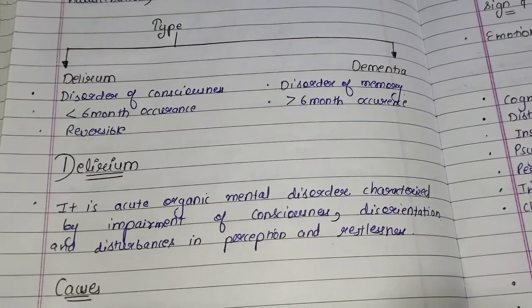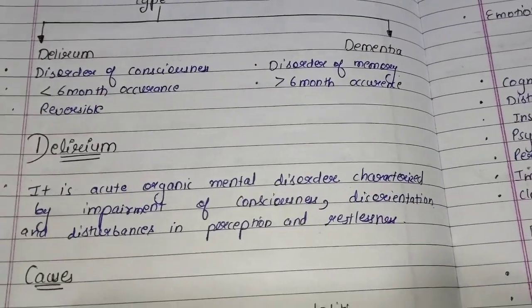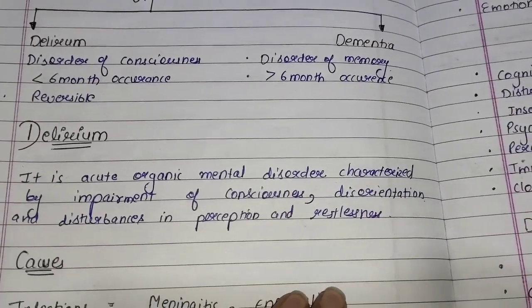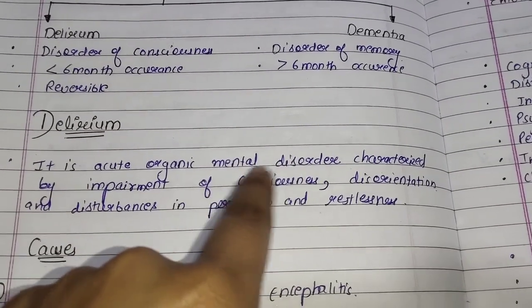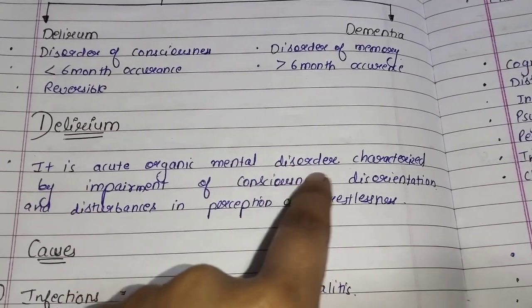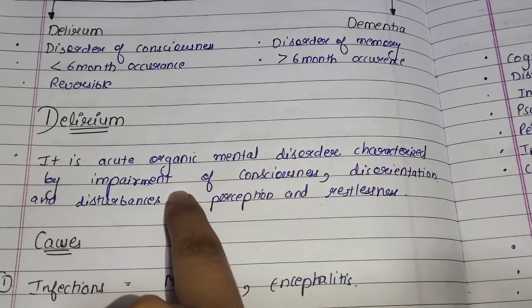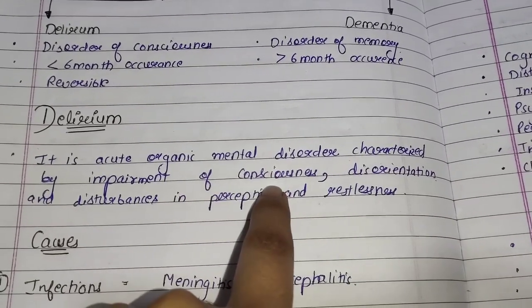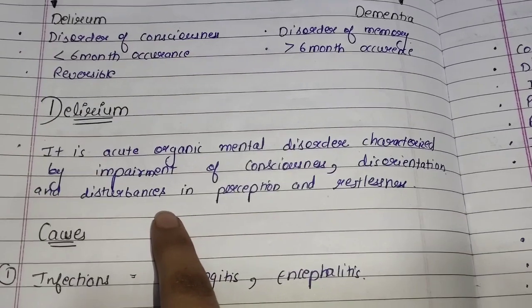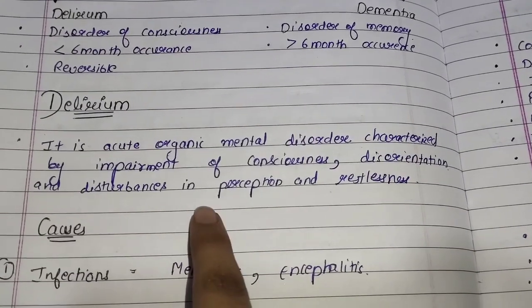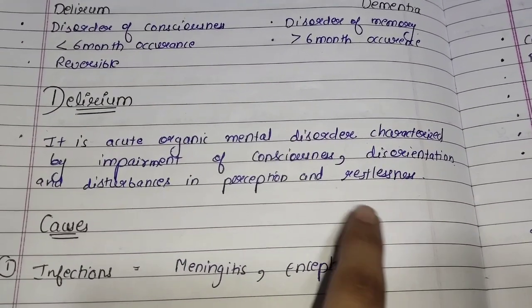First of all, we will study about delirium. Delirium is an acute organic mental disorder characterized by impairment of consciousness, disorientation, and disturbance in perception and restlessness.